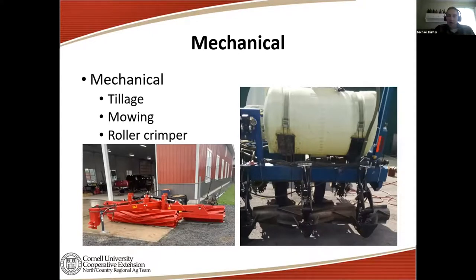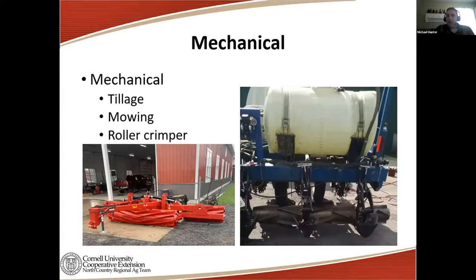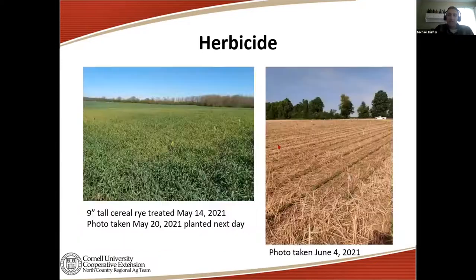Another mechanical termination method is mowing. A lot of dairy farms are using rye; winter triticale is really popular and is harvested in springtime as a high-quality dairy forage — mowing is an effective way to terminate that cover crop stand. Another method is the roller crimper. One example on the slide is from an organic dairy in the North Country that purchased a roller crimper to roll their cereal rye crop and then no-till soybeans into that. Another setup shows a roller crimper on a toolbar ahead of a corn planter.